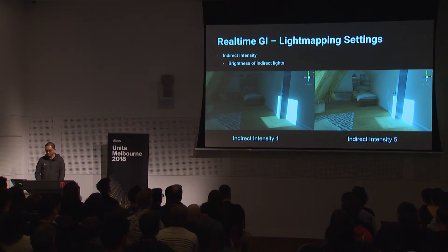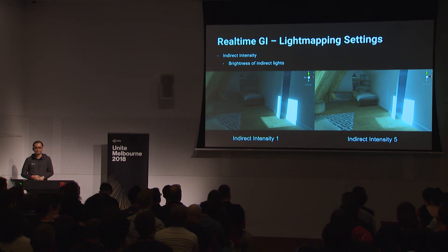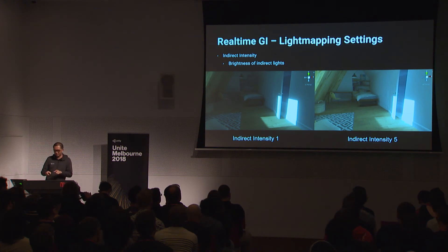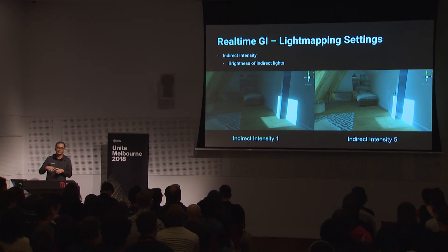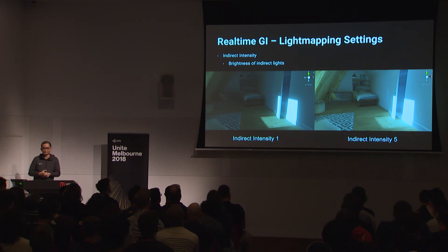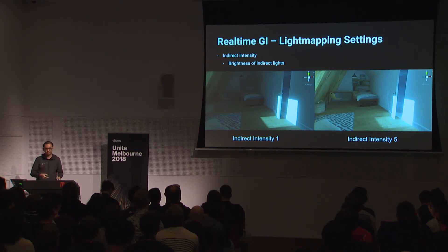The next parameter is indirect intensity, which controls the brightness of indirect lights. The direct light intensity stays constant while only indirect light intensity changes. With real-time GI, you can just tweak the slider and see an instant update without rebaking.